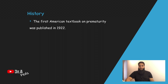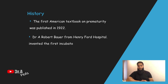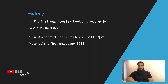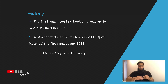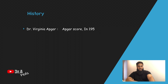The first American textbook on prematurity was published in 1922. In 1931, Dr. A. Robert Barr from Henry Ford Hospital invented the first incubator, which had heat, oxygen, and humidity, making it much more effective in preserving the life of a child.